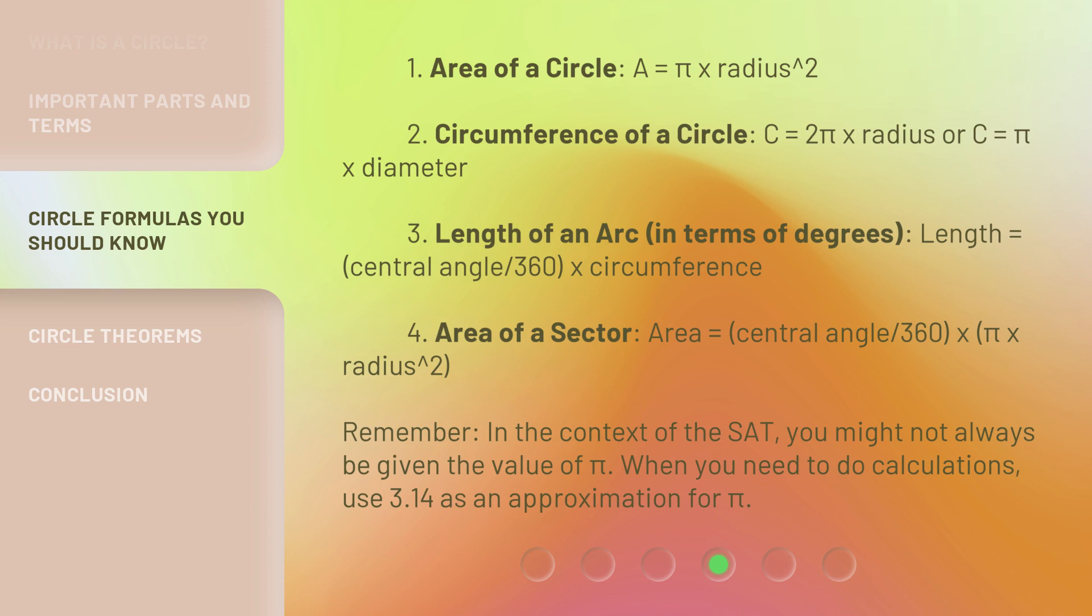3. Length of an arc in terms of degrees: length = (central angle / 360) × circumference.